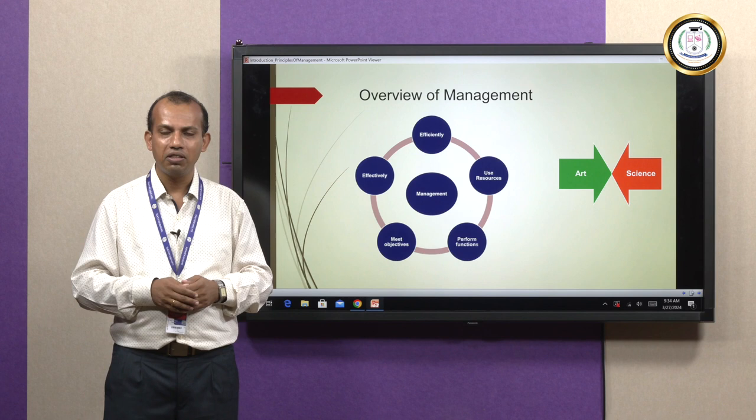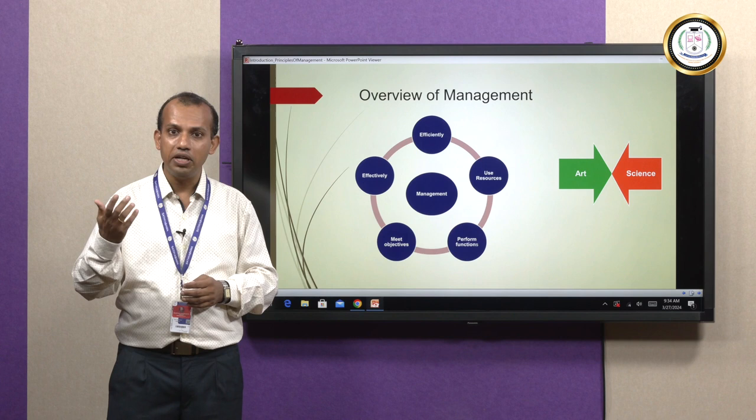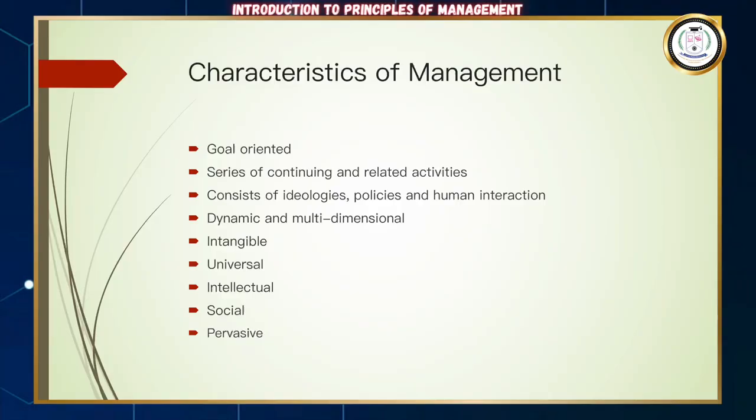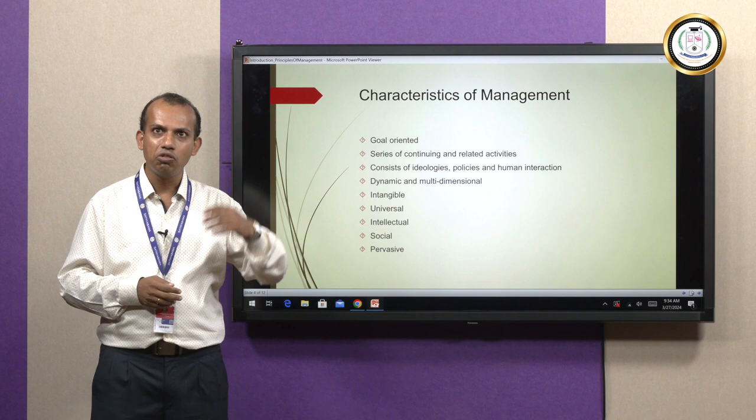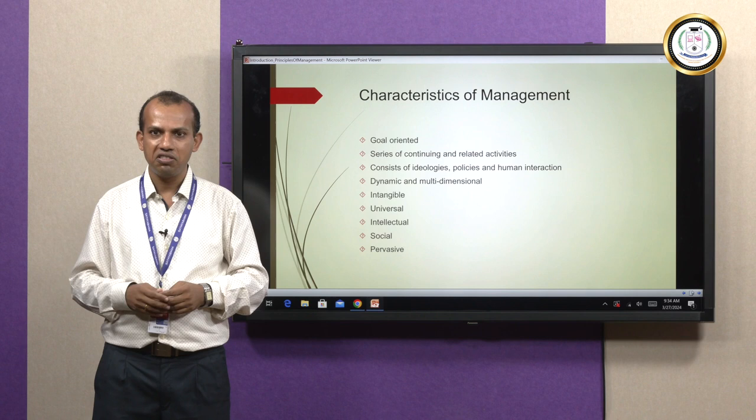Since the science of managing is imperfect, one has to acquire the artistic managerial ability to perform and proceed further in one's career. What are some of the characteristics of management? Management is goal-oriented — everything is directed towards a goal or objective, and everyone has to follow that, which could be at the individual unit or department level.